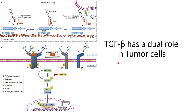One way TGF-beta can promote metastasis is through disruption in the glycosylation profile, leading to over-sialylation of the receptors that interact with immune cells. These receptors become shielded by over-sialylated glycan structures, which causes immunosuppression — preventing immune cells from detecting antigen receptors and interacting with receptors present on tumor cells.